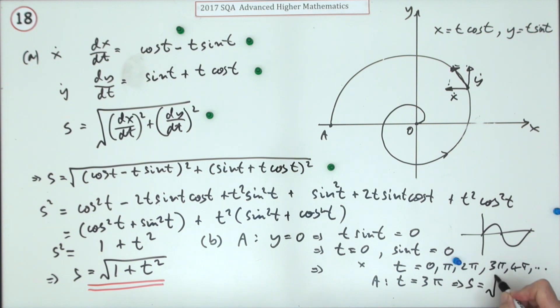Which means the speed at that point is going to be the square root of—just leave it in the exact form—which is 1 plus this squared: 1 plus 9π squared. There it is.